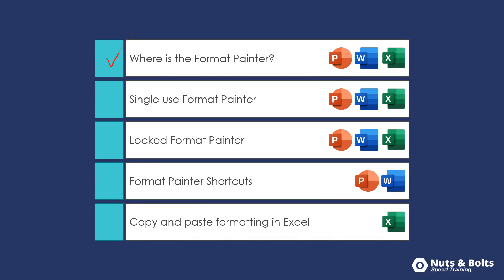In this video, if you want to jump around, we'll look at where the Format Painter is — there are actually two Format Painters. We'll look at the Single Use and Locked Format Painter, which is the same in all three programs: PowerPoint, Word, and Excel. We'll then look at the Format Painter shortcuts, but those only work inside PowerPoint and Word. If you want to copy and paste formatting using keyboard shortcuts, I'll show you how to do that when we look at copying and pasting formatting in Excel using the Paste Special dialog box.